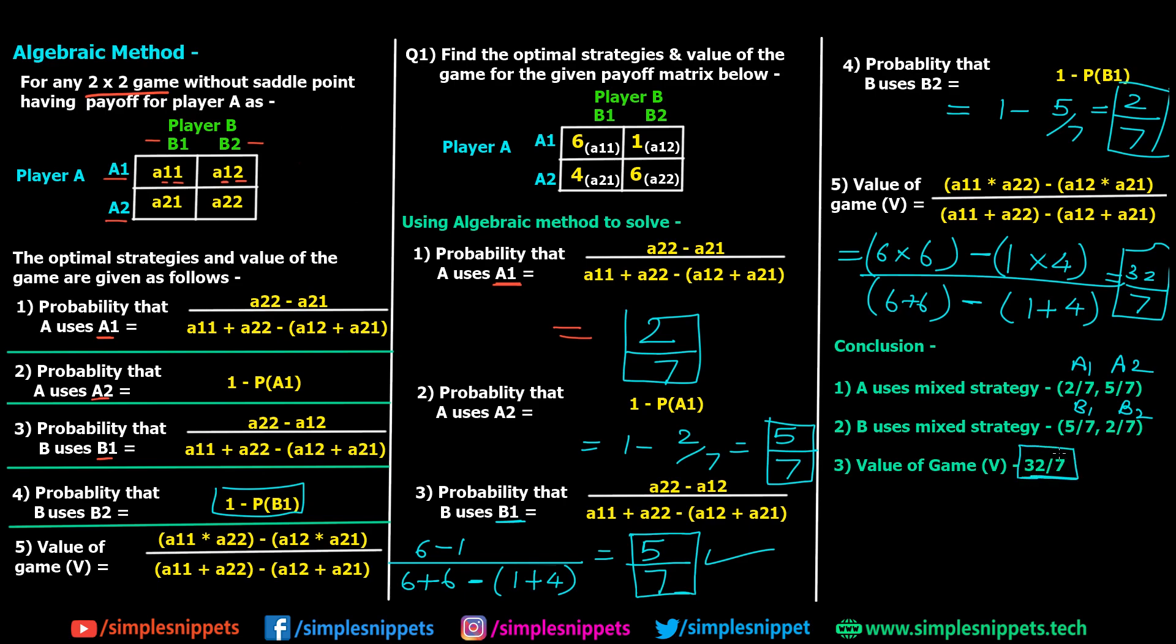So this was the algebraic method. It was pretty easy to understand because we only have to directly apply the formulas. This is something that you have to memorize. Algebraic method is used for any 2 cross 2 game without a saddle point. Whenever you do not get a saddle point for a 2 cross 2 matrix, you use this algebraic method.